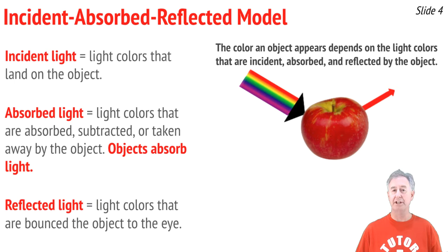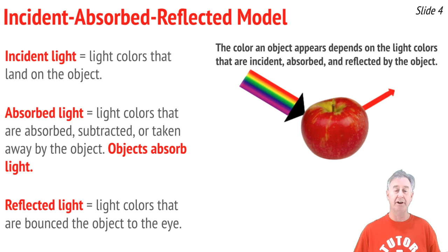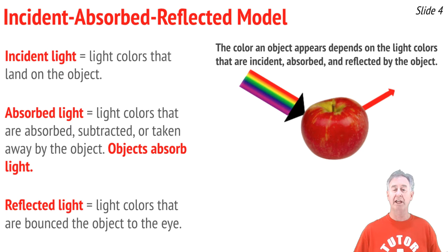The color that an object appears depends upon the light colors that are incident upon the object, absorbed by the object, and reflected by the object. All three are important. Incident light is the light that approaches the object and lands on its surface — oftentimes white light, or ROYGBIV light, or simply RGB light. The absorbed light is what the object subtracts or takes away, and whatever is not absorbed can be reflected to our eye, which our brain processes to determine what color we associate with that object.